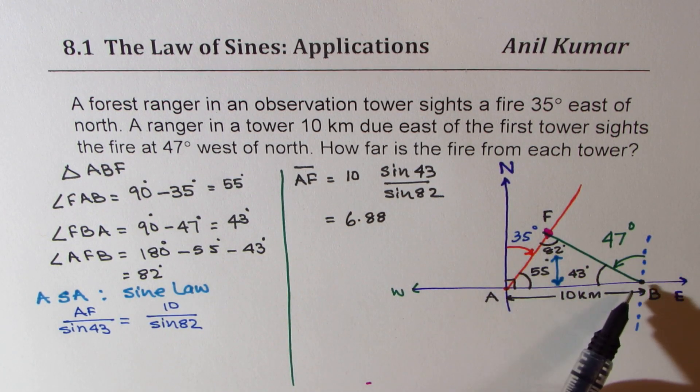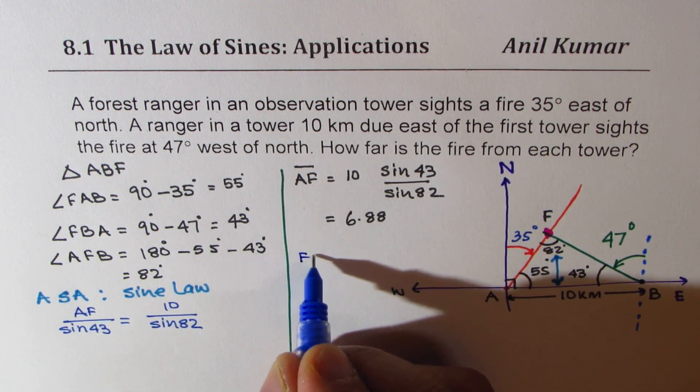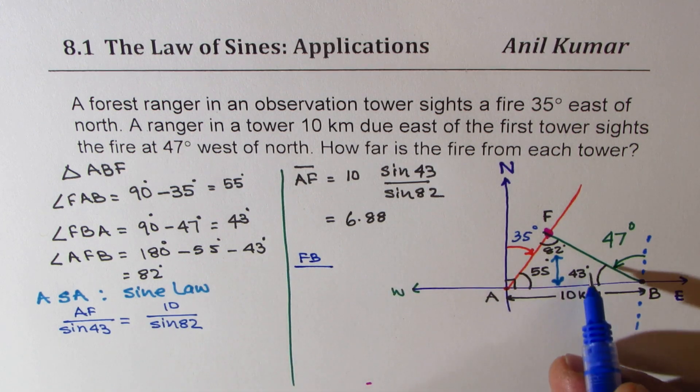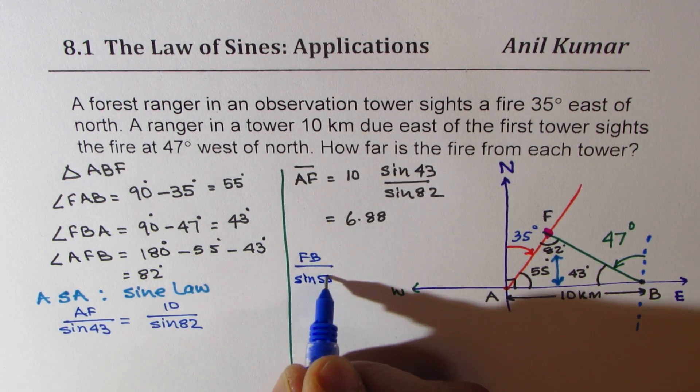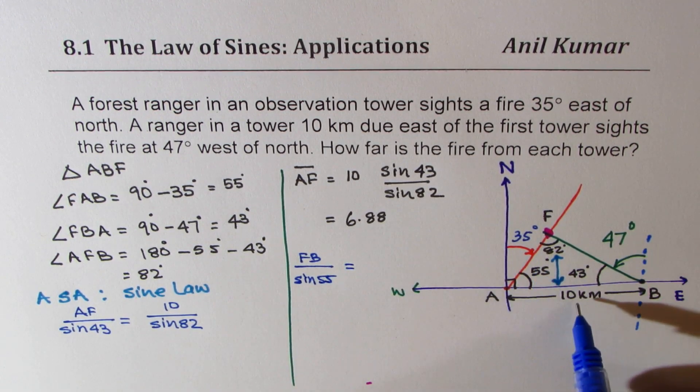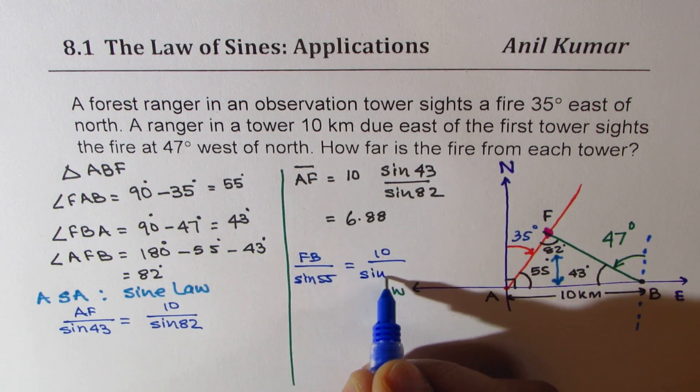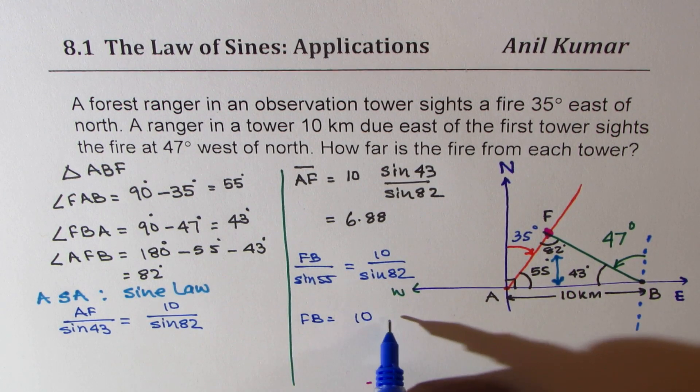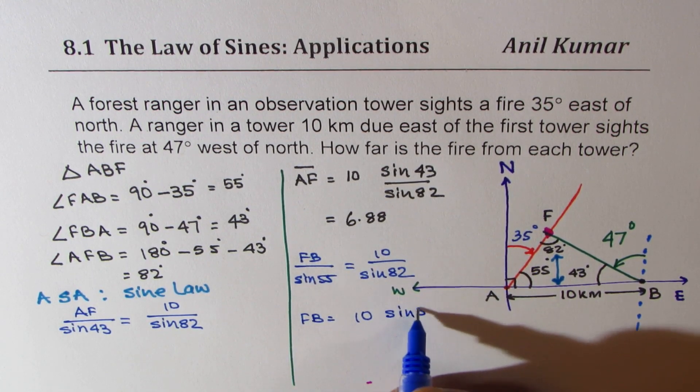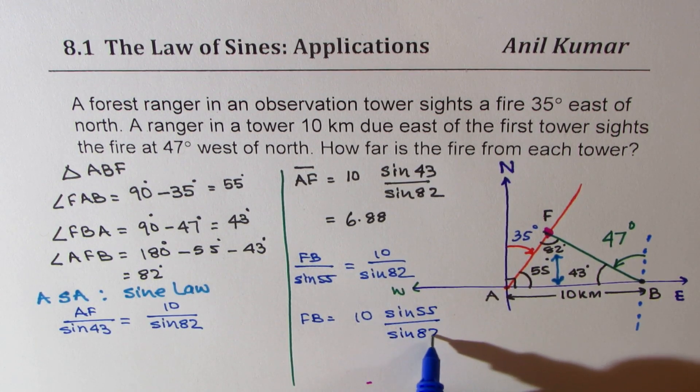Now let's find what FB is. So to find FB again we'll use the same sine law. So we can write FB over the angle opposite to FB, which is sine of 55 degrees, equals to what we know, 10 over sine of 82. So FB is equal to 10 times sine of 55 degrees over sine of 82.